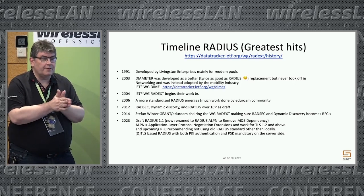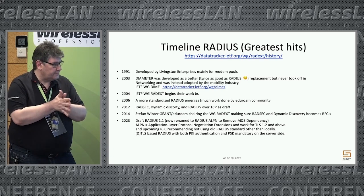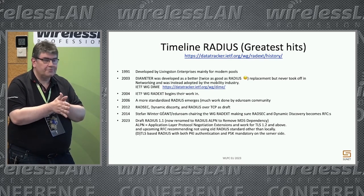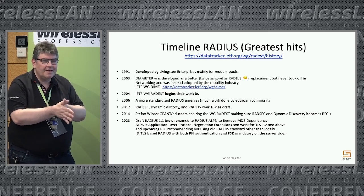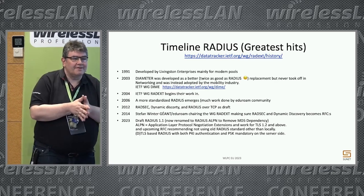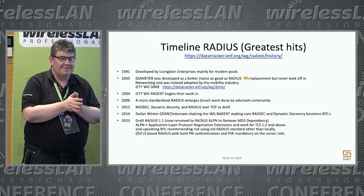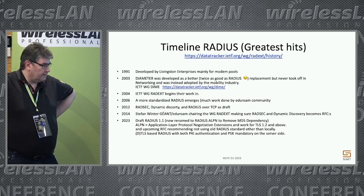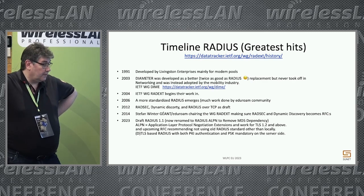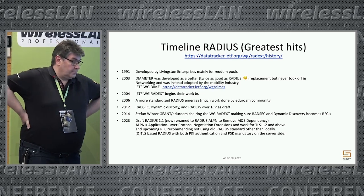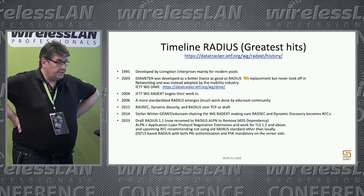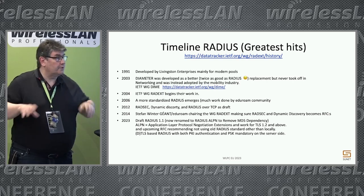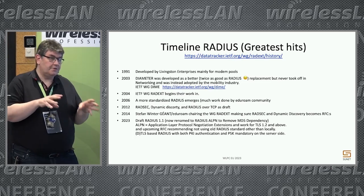And then we come to this year. There's now something called RADIUS 1.1, and I learned yesterday evening that they've decided to rename it to RADIUS ALPN, which stands for Application Layer Protocol Negotiation Extensions. This is a framework that will include a lot of stuff. Also included will hopefully be support for both TLS and DTLS. For those who don't know the difference: TLS is TCP-based, DTLS is UDP-based.